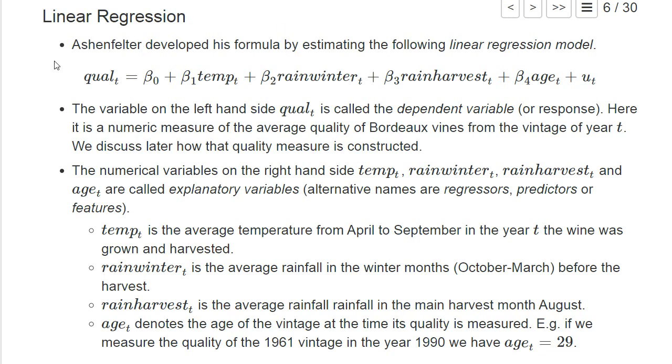He has a dependent variable on the left-hand side which measures the quality of a vintage, and this will be derived from the auction prices of the wines. We will come back later to how this variable is exactly computed.